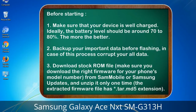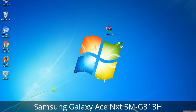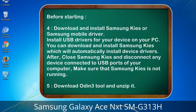3. Download the stock ROM file. Make sure you download the right firmware for your phone's model number from Sammobile or Samsung Updates, and unzip it only one time. The extracted firmware file has a *.tar.md5 extension. 4. Download and install Samsung Kies or Samsung mobile driver to install USB drivers for your device on your PC. After, close Samsung Kies and disconnect any device connected to USB ports of your computer — make sure Samsung Kies is not running.